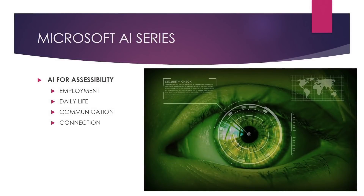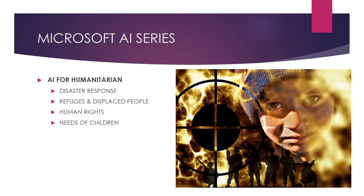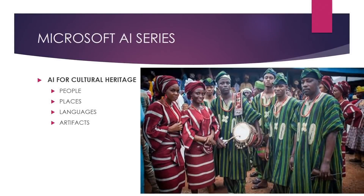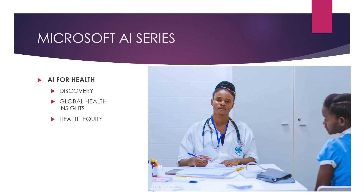Under AI for Accessibility, you have employment, daily life, communication, and connection. For AI for Humanitarian, we have disaster response, refugees and displaced people, human rights, and the needs of children. For AI for Cultural Heritage, you have people, places, languages, and artifacts. The focus of this video is the health category. AI for Health revolves around discovery, global health insights, and health equity.